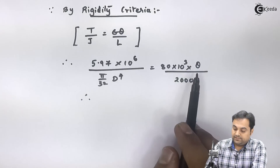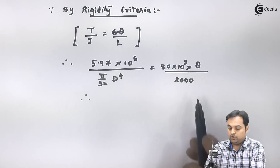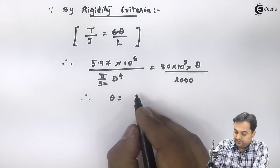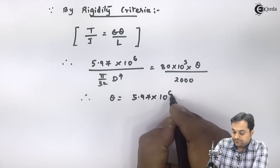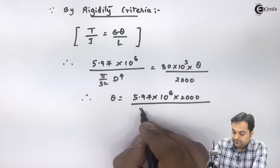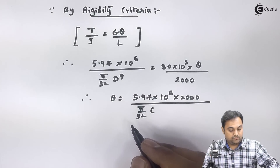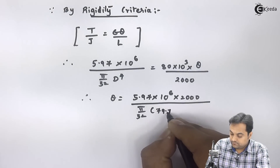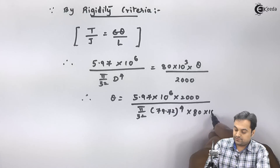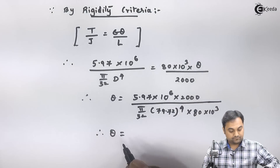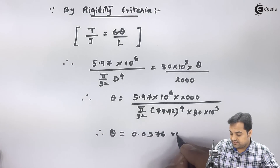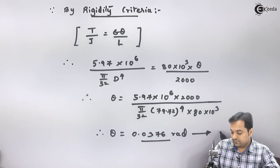Theta is what we need to calculate, and the length L is 2000 mm. Keeping theta on one side: theta equals 5.97 into 10 raised to 6 times 2000, divided by (π/32) times 79.72 raised to the power 4, multiplied by 80 into 10 raised to 3. Calculating this, theta comes out to be 0.0376 radians — this is the second answer.